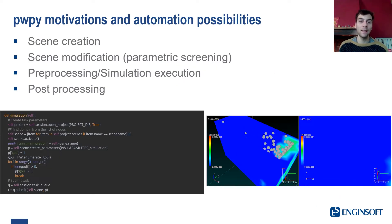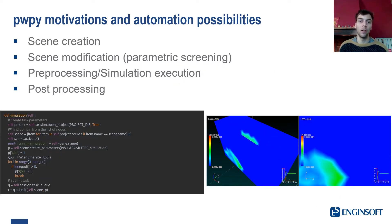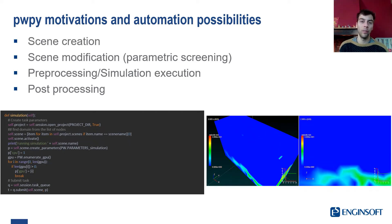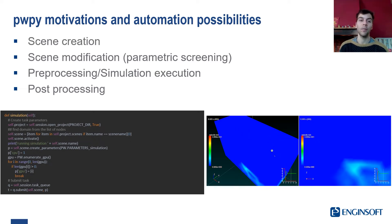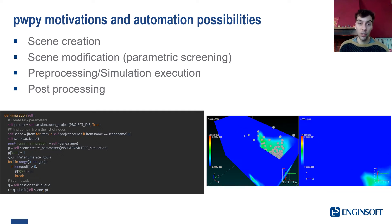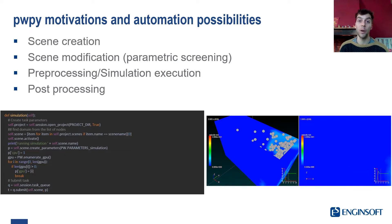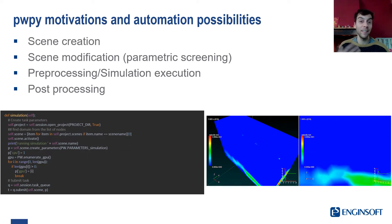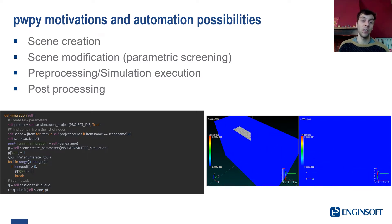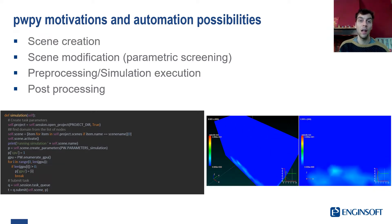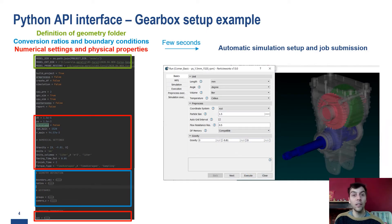PVPy is a Python API or module that is specifically designed to control ParticleWorks simulations. In this way, we can automate the scene creation, the modification of the scene, the preprocessing, simulation, and post-processing. There is very detailed documentation that allows us to understand how to control every part of the simulation, and it's very easy and user-friendly.